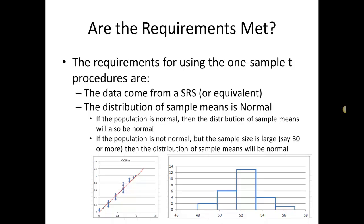The first thing that we need to do is we need to check our requirements just like we did with the hypothesis test. We did this in the other video so I'm just going to briefly go over that here. There's two requirements for using the one-sample t procedures. The first requirement is that the data come from a simple random sample. The second requirement is that the distribution of sample means is normally distributed. There's two ways to meet this requirement.